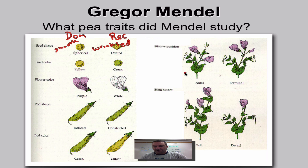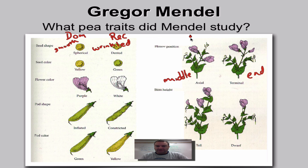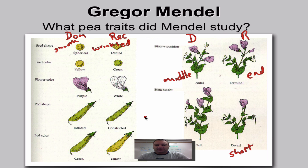Flower position: axial means in the middle of the stem, and terminal means at the end. Dominant is on the left, recessive on the right. Tall plant height is dominant over dwarf, which we'll typically refer to as short. These are some of the traits from the pea plant that we're going to be using in our genetics problems.